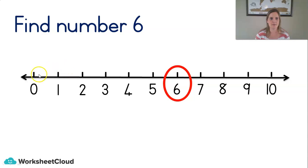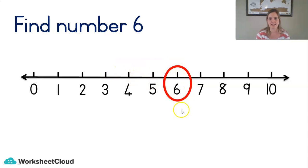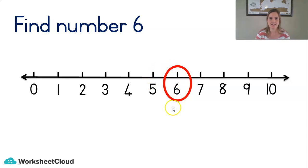Let's count from naught. Let's hop. One, two, three, four, five, six. Well done. What number comes before six? Five — that's right. What number comes after six? Seven. Good job.